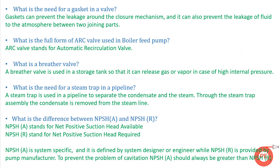The first question is: what is the need for a gasket in a valve? Gaskets are rubber-type materials placed between two pipes or between two mating flanges in order to prevent leakage. To get a tight shutoff, we provide gaskets between the two mating parts, between the flanges of a valve, or flanges in a pipeline. This is the basic purpose a gasket serves in a piping system.